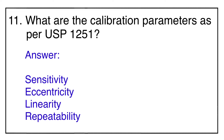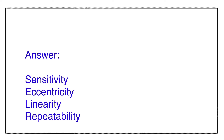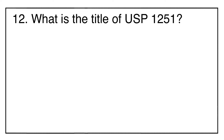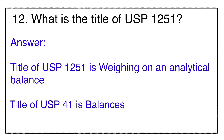Question number eleven: as per USP journal chapter number 1251, there are four balance calibration parameters — sensitivity, eccentricity, linearity, and repeatability. Note that repeatability is also mentioned in USP journal chapter number 41. Question number twelve: the title of USP journal chapter number 1251 is 'Weighing on an Analytical Balance.' The title of USP journal chapter number 41 is 'Balances.'